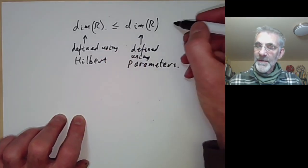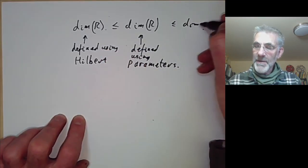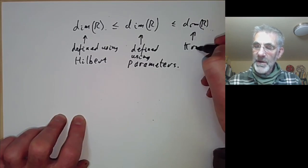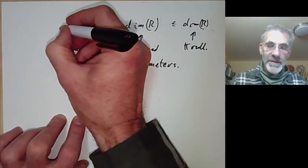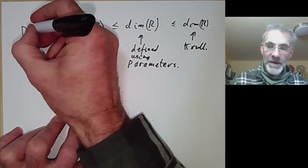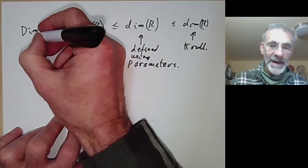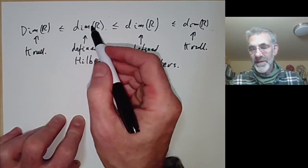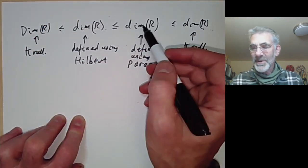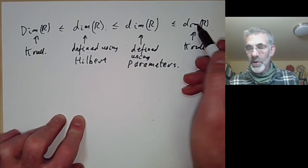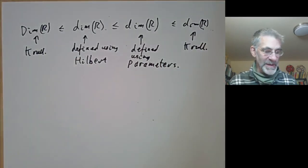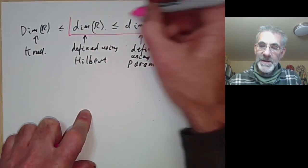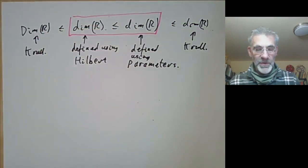There was a third definition which was the dimension defined by Krull, and we're going to prove the following inequalities in later lectures: the Krull dimension is less than the Hilbert dimension, which is less than the parameter dimension, which is less than the Krull dimension — which will show they're all the same. So this lecture we're just talking about the Hilbert and parameter dimensions, ignoring the Krull dimension.